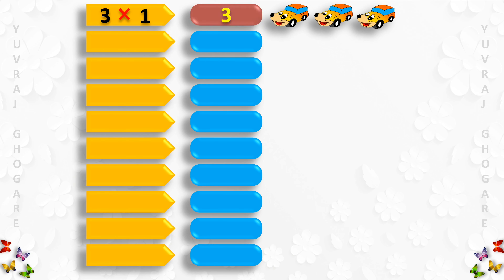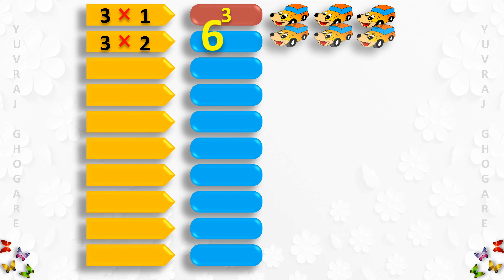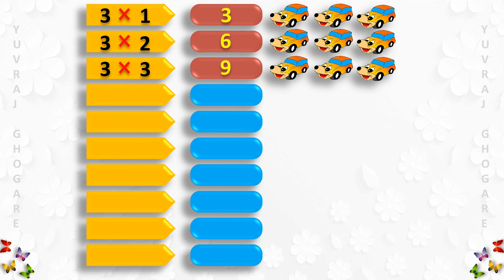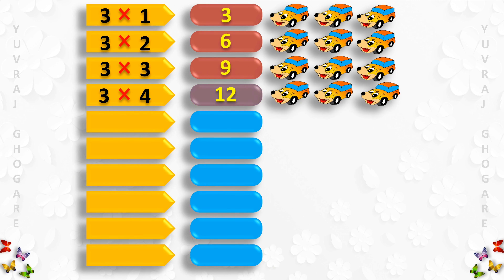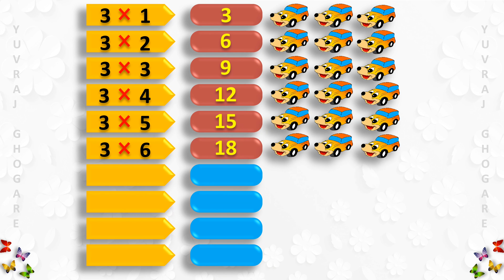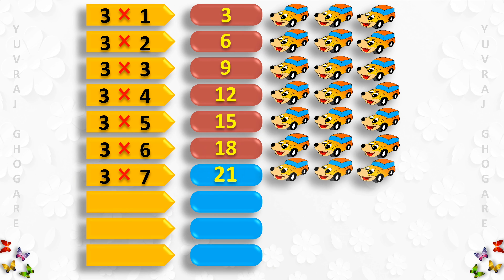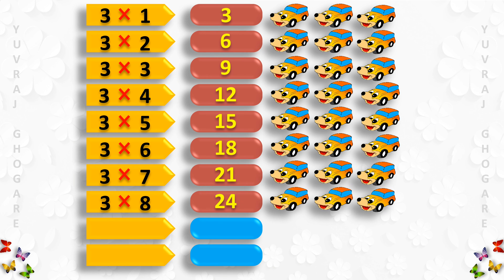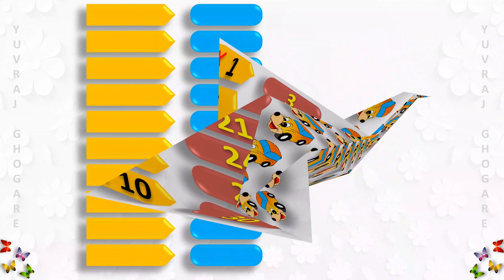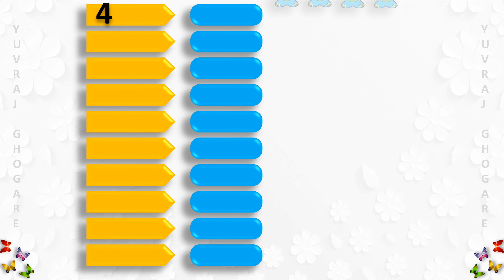Table of 3: 3 1s are 3, 3 2s are 6, 3 3s are 9, 3 4s are 12, 3 5s are 15, 3 6s are 18, 3 7s are 21, 3 8s are 24, 3 9s are 24, 3 10s are 30.